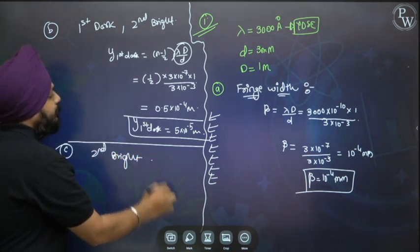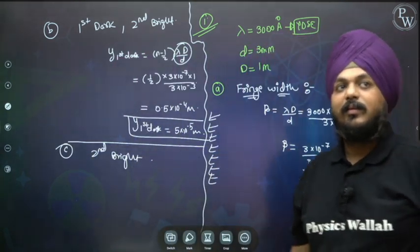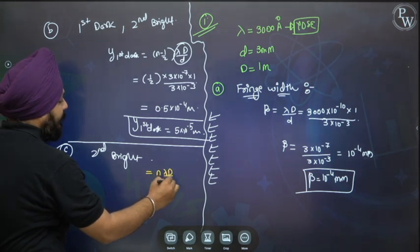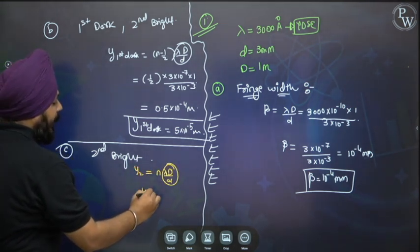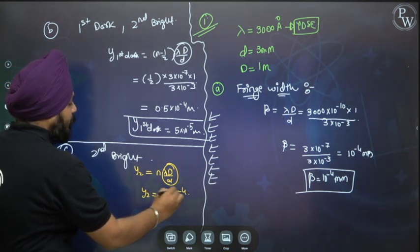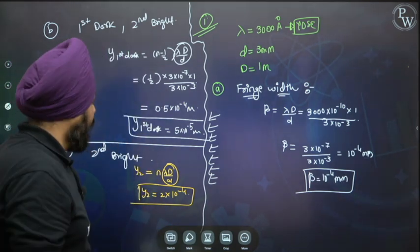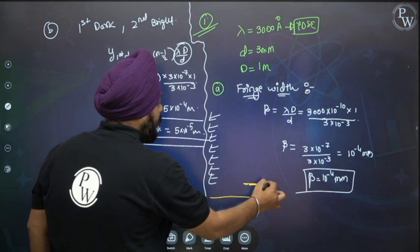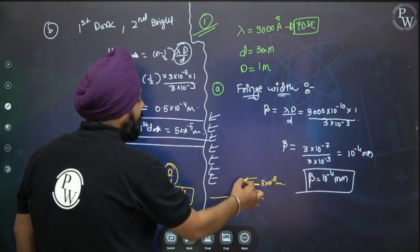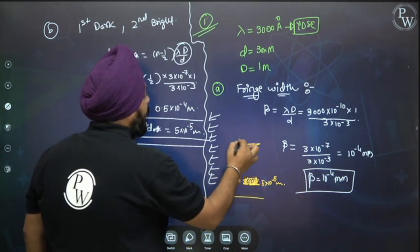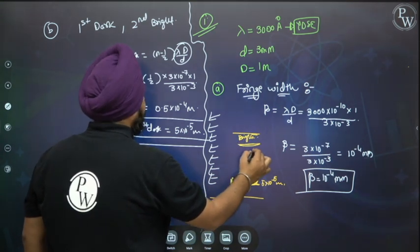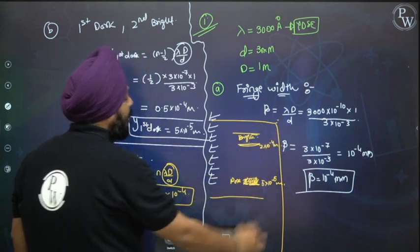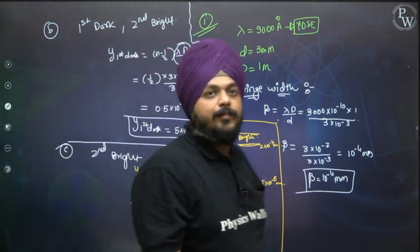Third: location of second bright fringe. Second bright = n×lambda×D/d with n = 2. That is 2×10^-4 m. So if central maxima is here, first minima (dark) is at 5×10^-5 m, and second bright fringe is at 2×10^-4 m from the center.